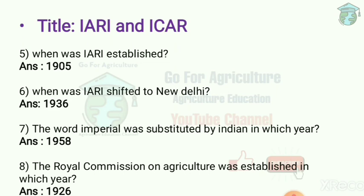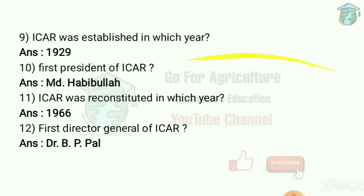The word 'Imperial' was substituted by 'Indian' in which year? 1958 — that is, Indian Agricultural Research Institute. The Royal Commission on Agriculture was established in which year? 1926. ICAR was established in which year? 1929.